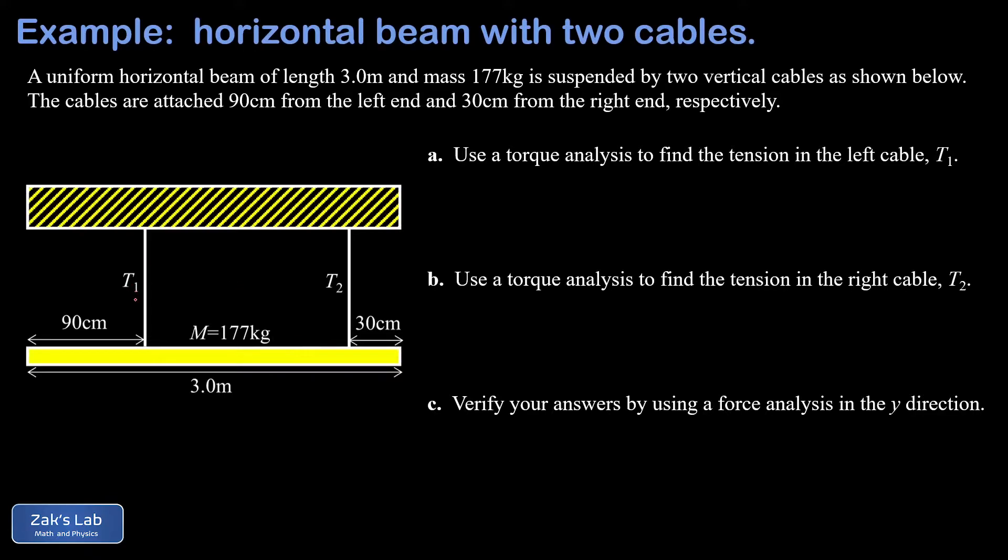The first string with a tension of T1 is connected 90 centimeters from the left end. The second string with a tension of T2 is connected 30 centimeters from the right end. The total length of the beam is three meters. The problem is broken into three parts: parts a and b we're going to get the tensions T1 and T2, and then in part c we're going to use a force analysis to verify that our answer is correct.